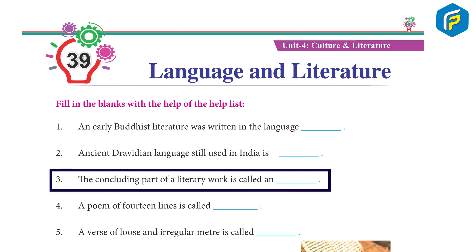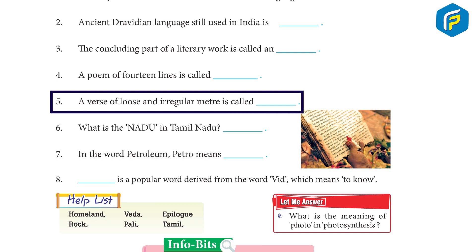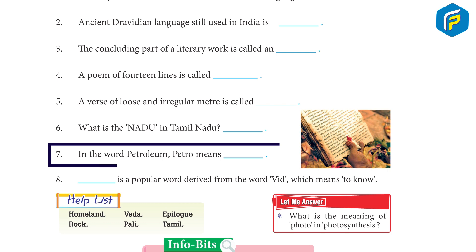Three: the concluding part of a literary work is called an epilogue. Four: a poem of 14 lines is called a sonnet. Five: a verse of loose and irregular meter is called doggerel. Six: what is the Nadu in Tamil Nadu? — Homeland.